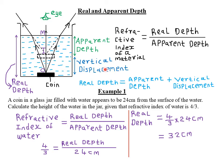Vertical displacement is the difference between the real depth and the apparent depth. Therefore, we can conclude that real depth is equal to apparent depth plus the vertical displacement. If we want to find the refractive index of the water — the material through which refraction is taking place — the refractive index of a material shall be given by the formula: real depth divided by apparent depth.